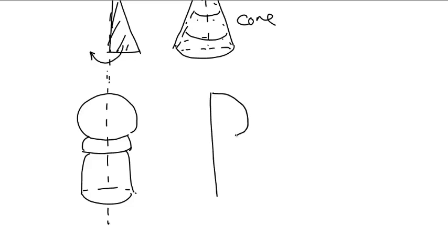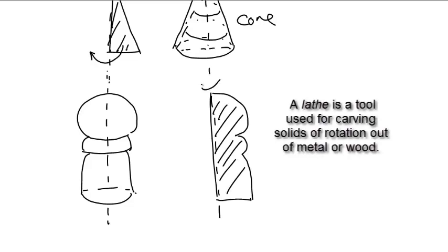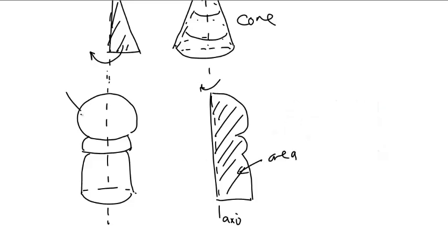It would look something like this. And if you rotate that area around this axis, here's the axis, here's the area, and here is the solid of rotation.